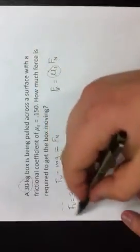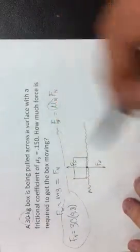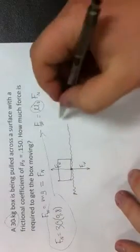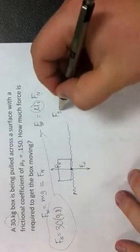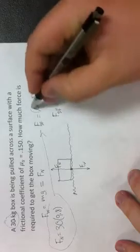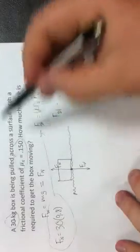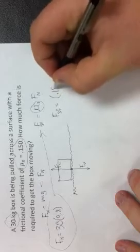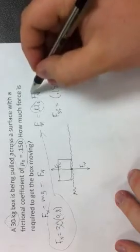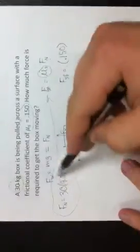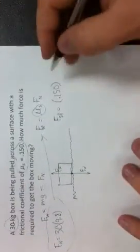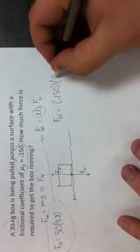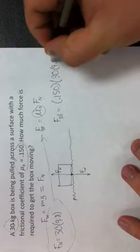We can now take this and substitute it into our friction formula. The force caused by static friction is equal to the coefficient of static friction, which is given here as 0.150, and inserting the normal force into our equation gives a value of 30 times 9.8.